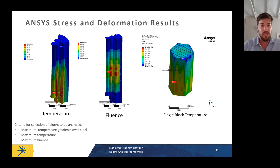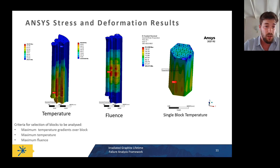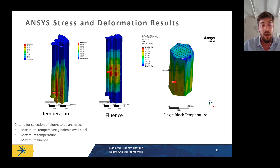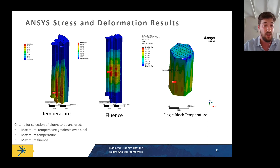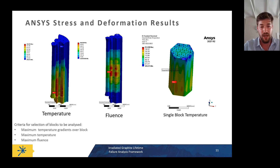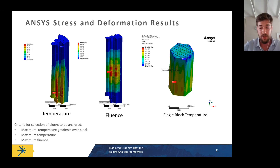A typical core temperature and fluence dataset shows the entire graphite structure: as coolant flows through, blocks heat up progressively. The highest fluence points may be at different locations from the highest temperature points, and both thermal stress and radiation-induced changes depend on fluence and temperature. Temperature gradients are likely the primary driver of failure, because adjacent parts of a block can experience different amounts of irradiation-induced change simultaneously — one part shrinking while the other grows.